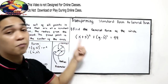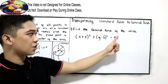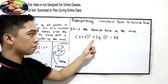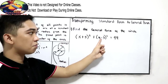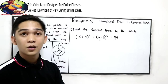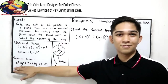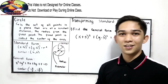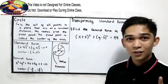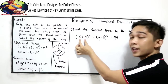Let's have problem number one: find the general form of the circle — quantity x plus 5 raised to 2, plus quantity y minus 3 raised to 2, is equal to 49. We're going to transform this into general form. Our first step: we need to expand our square of a binomial.